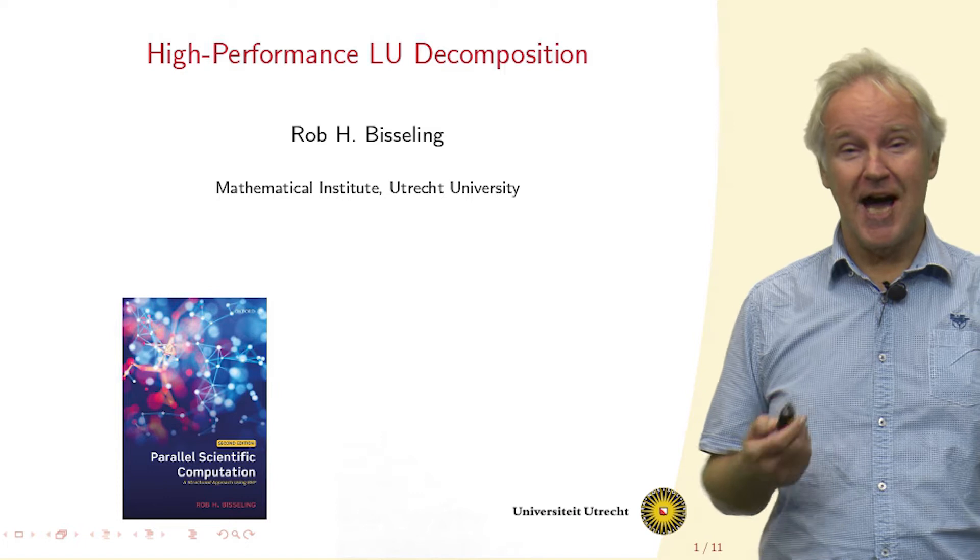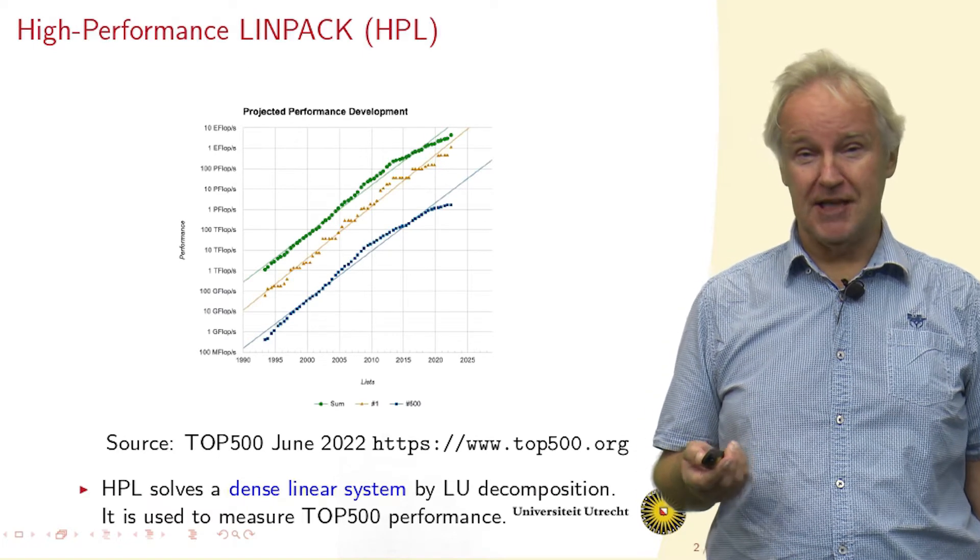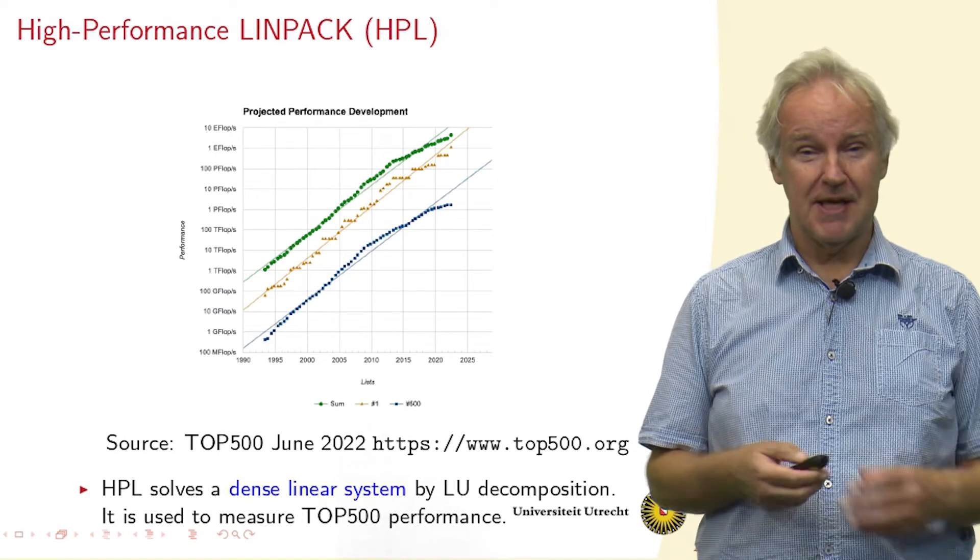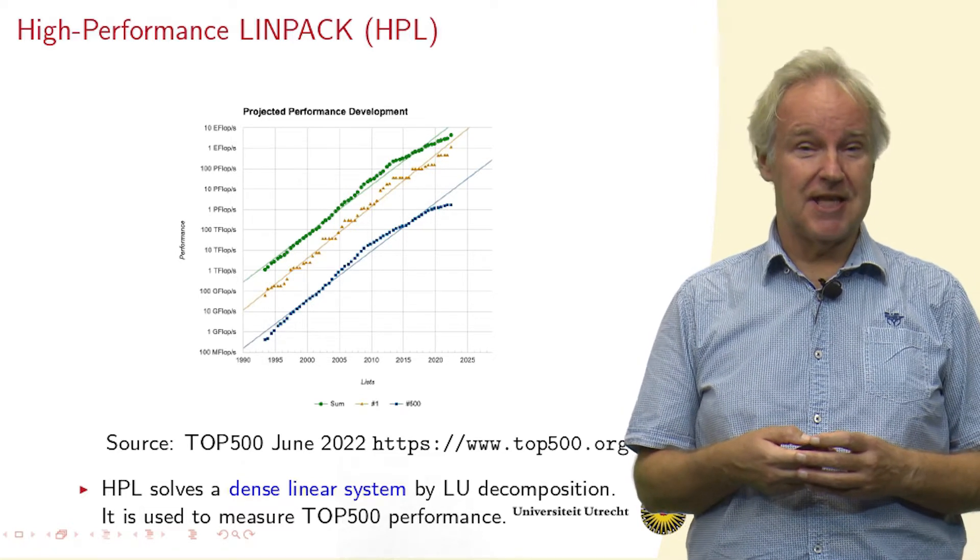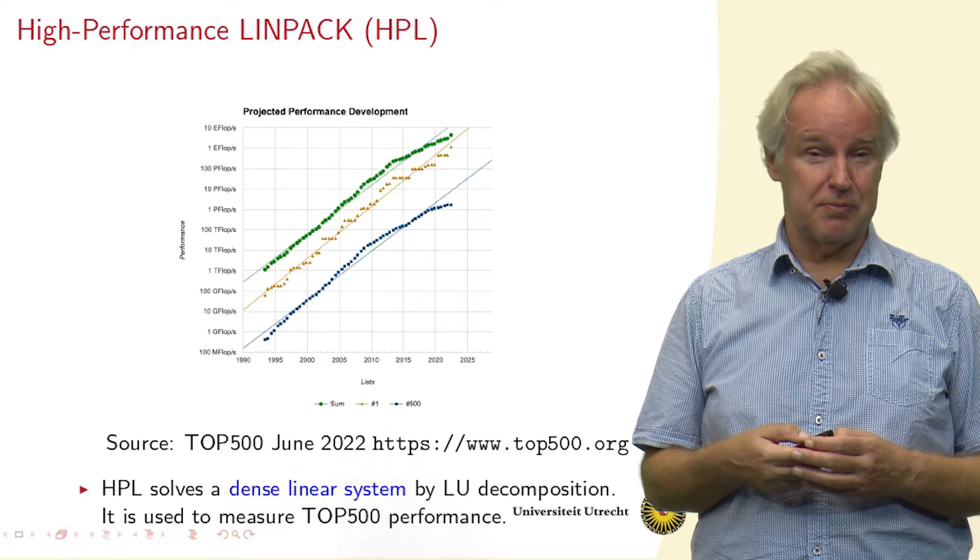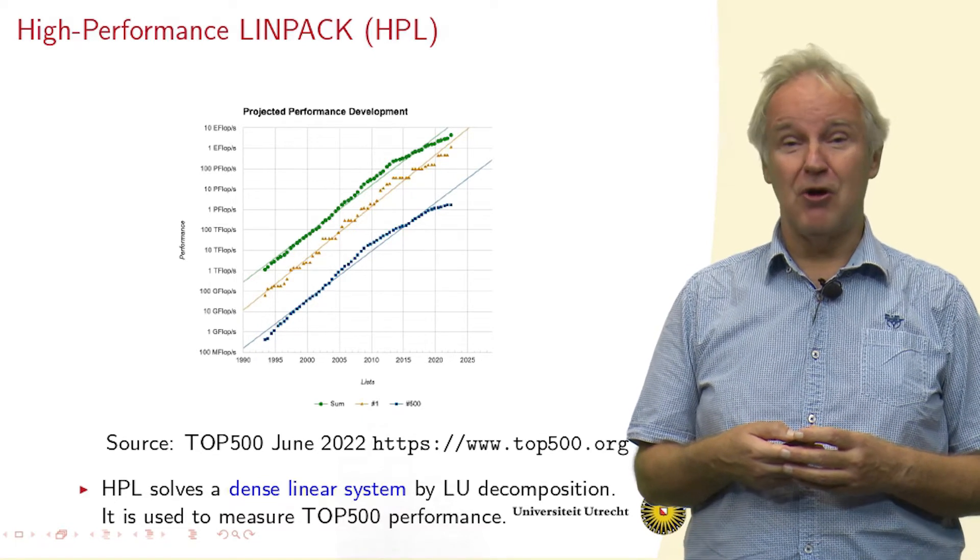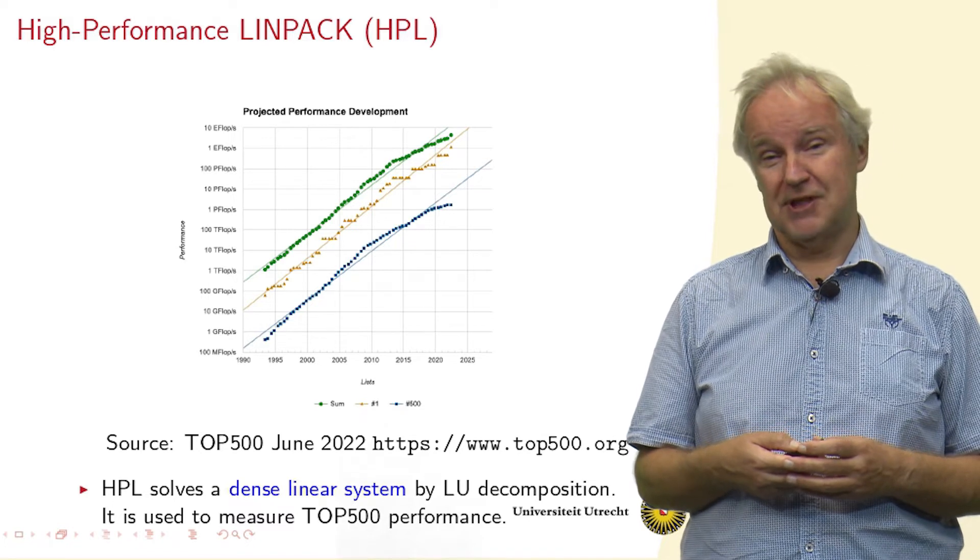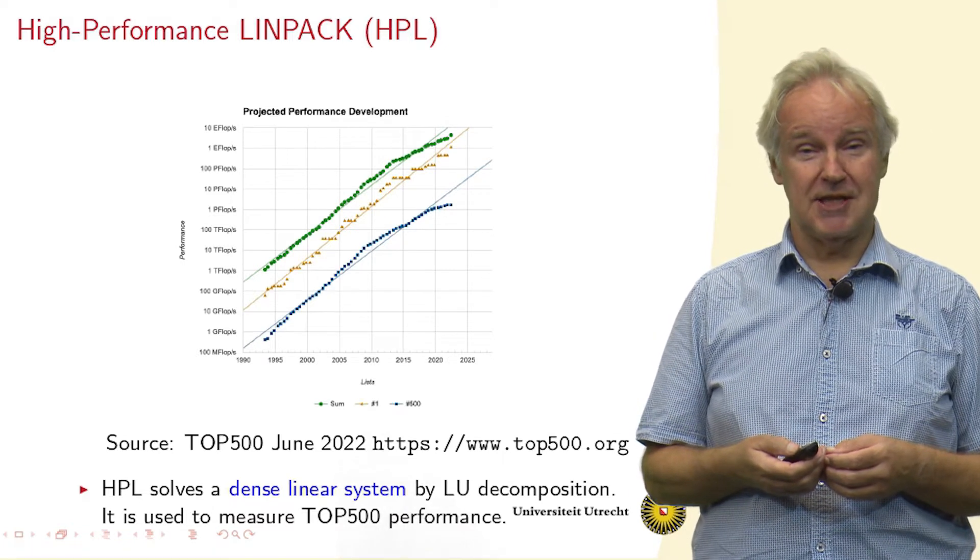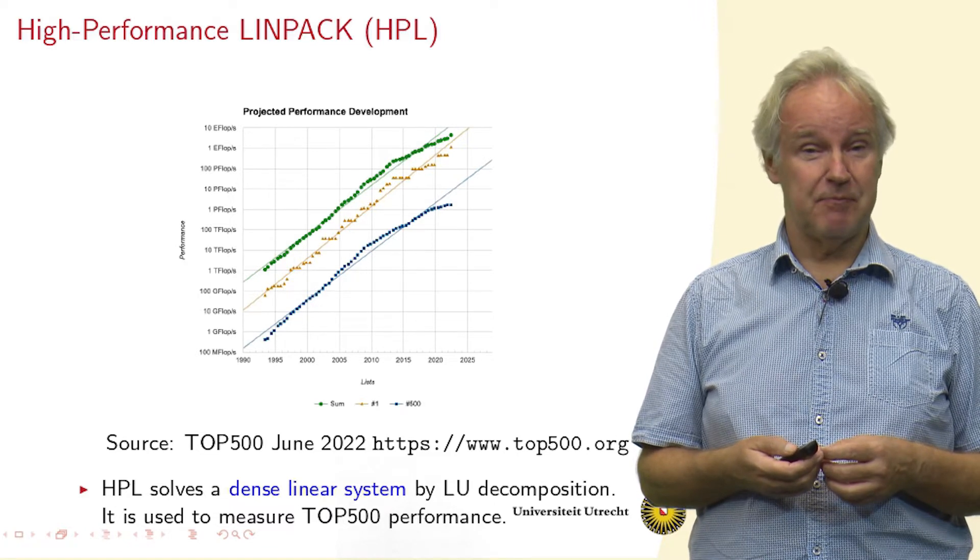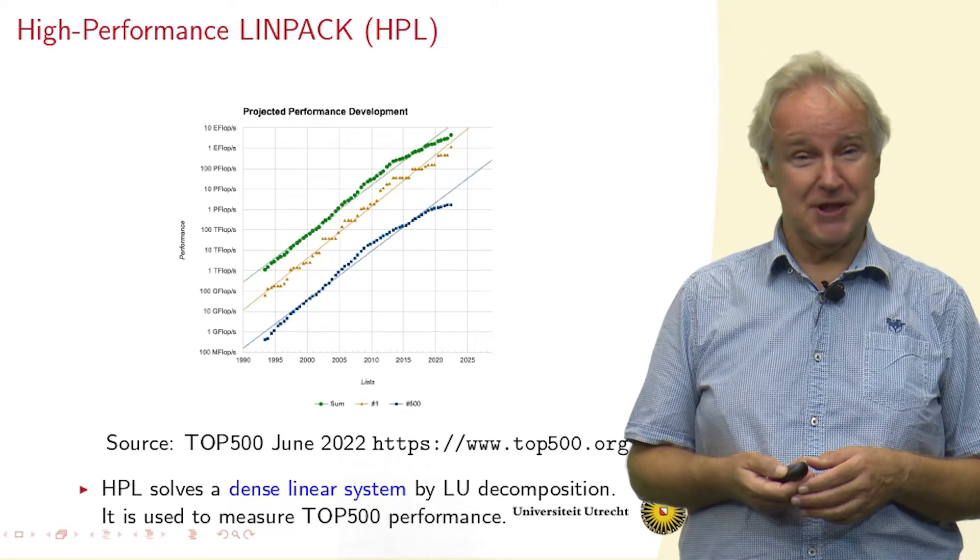In this video we are going to squeeze the highest performance out of our LU decomposition algorithm. Here you see the high performance Linpack benchmark which is taken from the top 500 list from June 2022. In this list you see how fast the top supercomputers of the world are. The middle line gives the fastest, the top line gives the sum of all the 500 best supercomputers in the world. To achieve the numbers, to get the numbers in this picture, a benchmark based on LU decomposition, dense LU decomposition is performed. So that's one reason why LU decomposition is important.